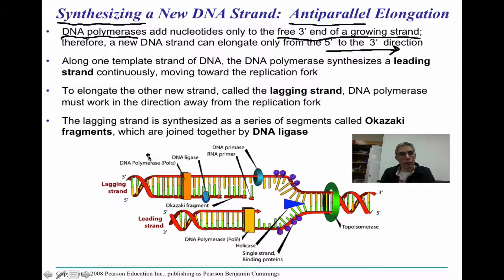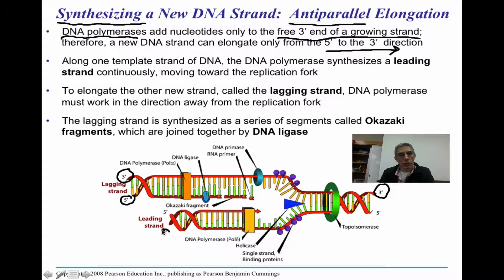If you look at the diagram, you can see the 3' and 5' ends labeled. Following the strand through, one side runs 3' to 5', and the opposite side runs 5' to 3'. Understanding this anti-parallel orientation is going to be important when it comes to replicating the DNA.